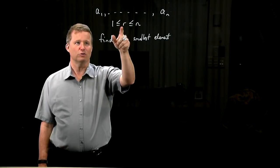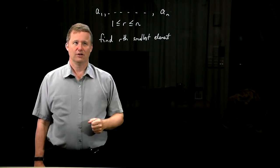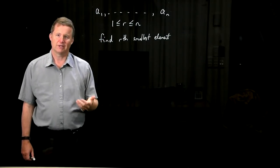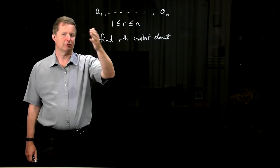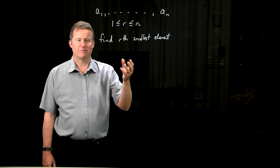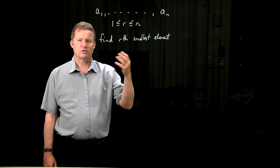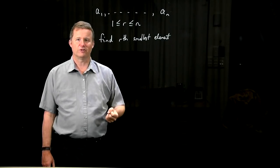However, if r is equal to 1 or n, let's say, we know that finding the minimum or the maximum can be done in linear time just by scanning through. It's not obvious whether the median could be found in linear time. At least for some values of r, sorting the entire list is not going to be efficient.